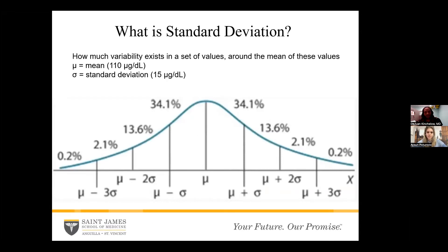Standard deviation is the measure of variability in a set of values around the mean. The mean is going to be the average, which can be represented by mu. In this case, our mean was 110. If we look right at the center of the bell curve — for those joining via audio, a bell curve looks kind of like a bell: you start down, go up to a peak which is your mean, and then go down. It's going to be equal on both sides. The standard deviation can be shown as sigma, which in this case is 15 micrograms per deciliter.